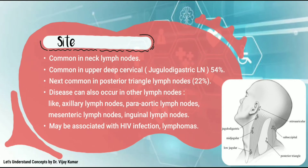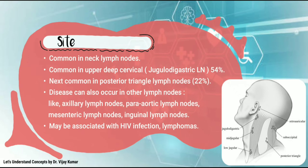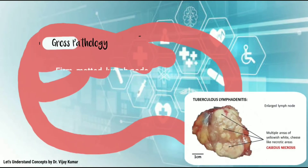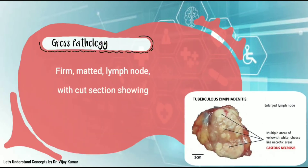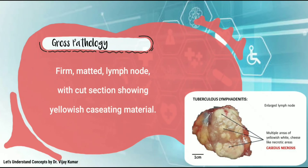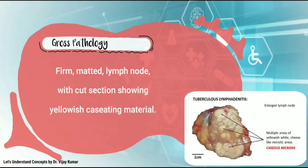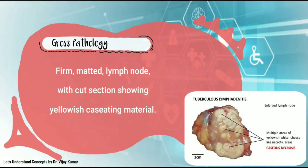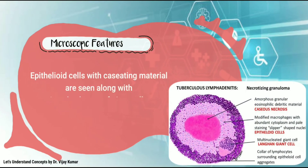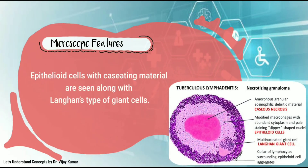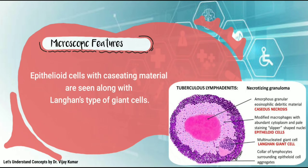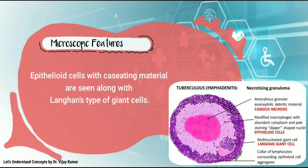The disease may be associated with HIV infection and lymphomas. On gross pathology, a firm, matted lymph node with cut section showing yellow caseating material is seen. Microscopically, epithelioid cells with caseating material are seen along with Langhans-type giant cells.